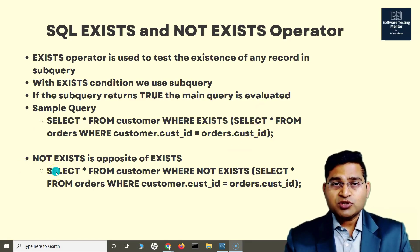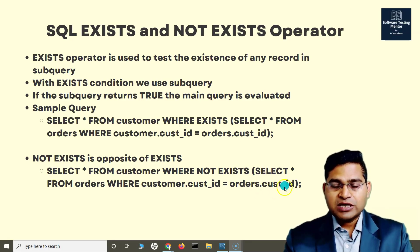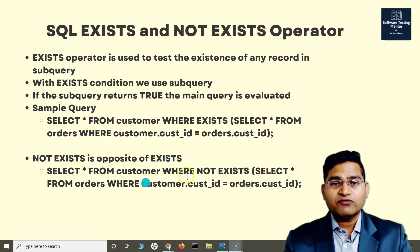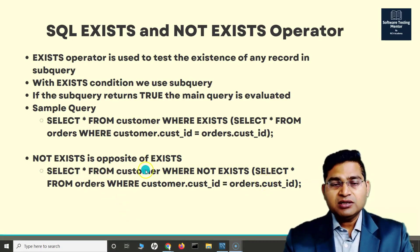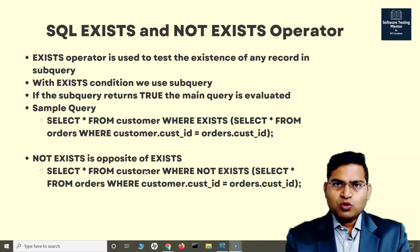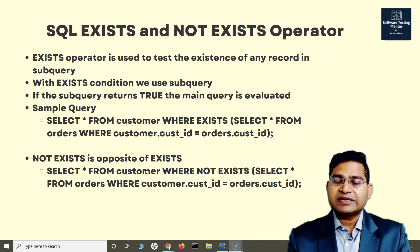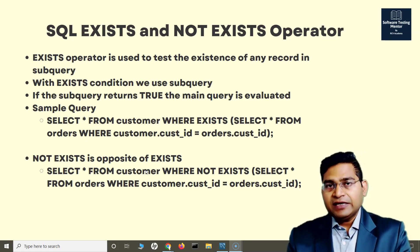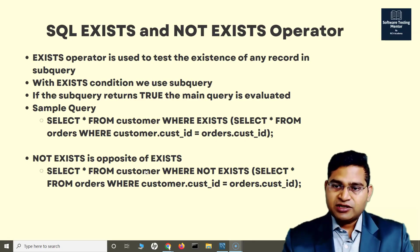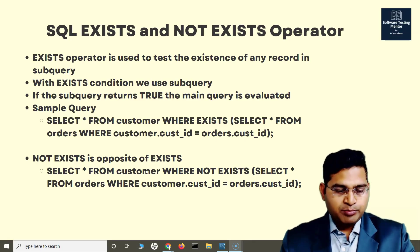NOT EXISTS is exactly the opposite. Whatever rows are being returned by the subquery — the opposite of that will be returned in the response. So NOT EXISTS will return records where the subquery condition is not met. Exists is basically the operator to test the existence of any record in the subquery; if the subquery returns true, the main query gets evaluated.